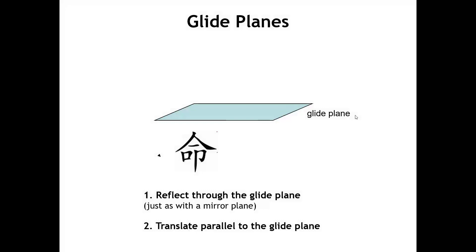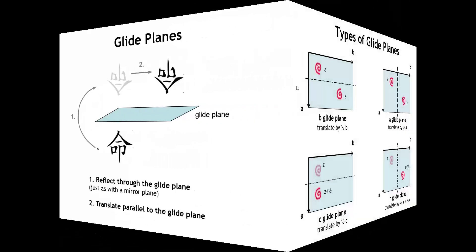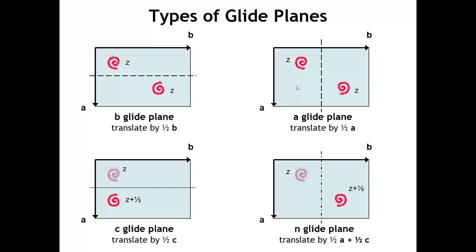Let's start with the glide plane. The glide plane is a composite of two different symmetry operations. First, we're going to reflect through the plane — so this would be an operation equivalent to a mirror. And then we're going to translate parallel to the glide plane. The net effect is to take this object here and recreate it over here. Now there's more than one kind of glide plane. Unlike a mirror, where the location and orientation of the plane tells you everything you need to know, in a glide plane we have an extra degree of freedom: the direction of that translation.